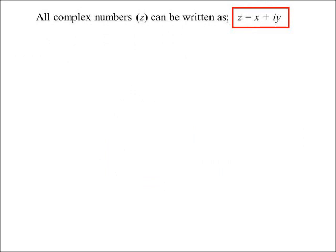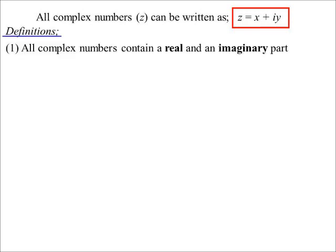Every complex number can be written as z = x + iy — z is one of the more common notations, w or omega are used a lot as well. Breaking that up, there's a real part and an imaginary part. The real part is x, and the imaginary part is y. Now both x and y are real numbers — y is just the coefficient of the imaginary part. When I said you've been dealing with these your whole life, the imaginary part of all the numbers you've dealt with so far is simply zero.